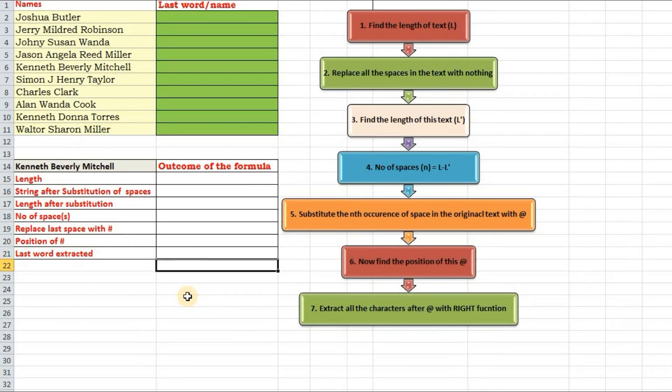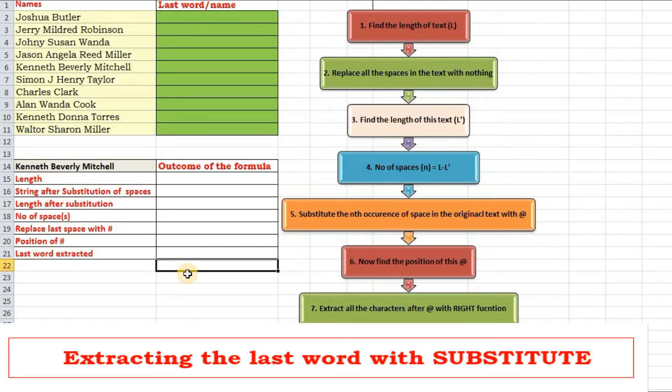It is comparatively easier to extract the first word from a text but the real challenge lies in extracting the last word which can be achieved in two ways. The first method involves a long formula, the entire logic of which in my opinion is very lengthy. We will learn this method first and in the end of this video with the help of offset function I will show you how the same task could be achieved smartly in much lesser time.